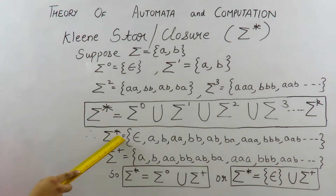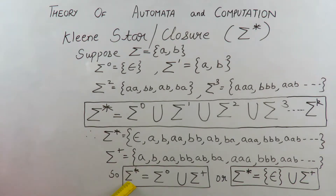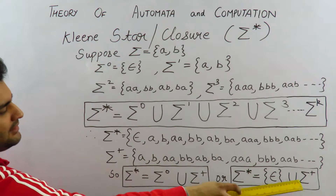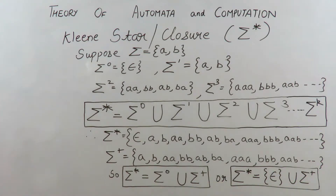Sigma star is called the closure and sigma plus is called the positive closure. The formula is: sigma star equals sigma 0 — the null string — union with sigma plus. All the strings in sigma plus are union with the null string, or we may write: sigma star equals null string union sigma plus. I hope powers of alphabets, Kleene star closure, and positive closure are now clear to you.